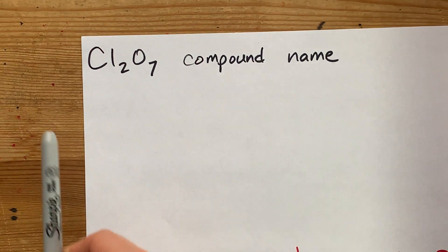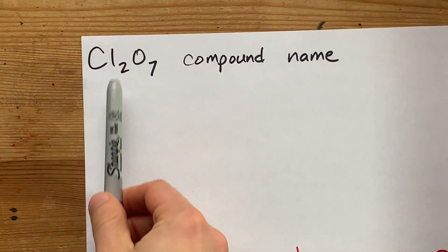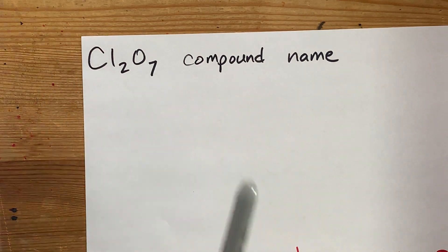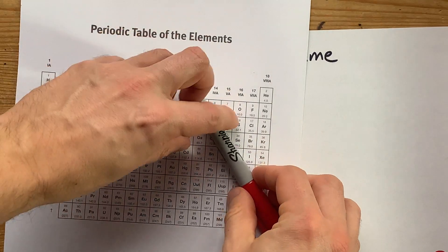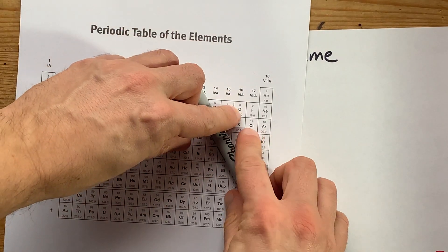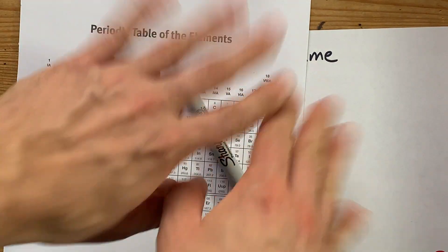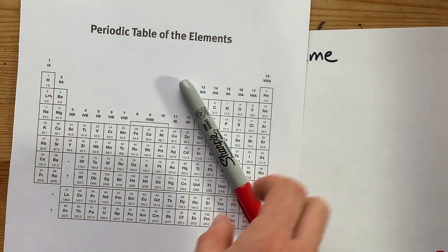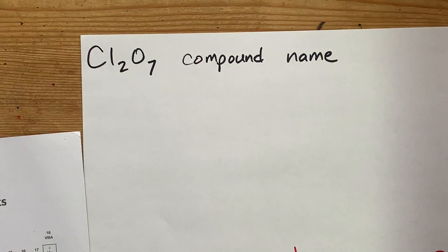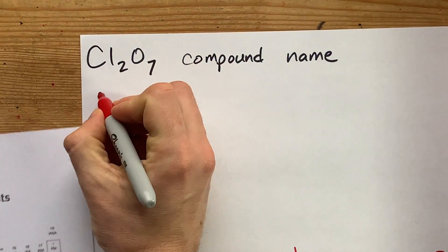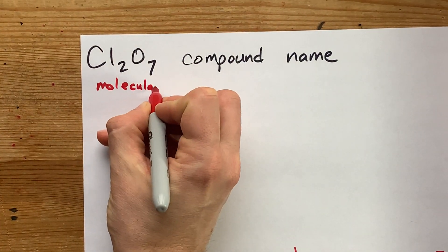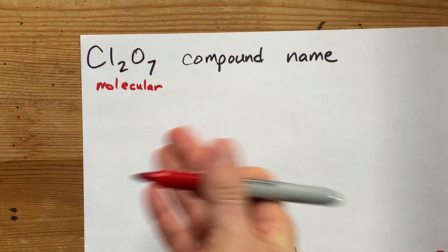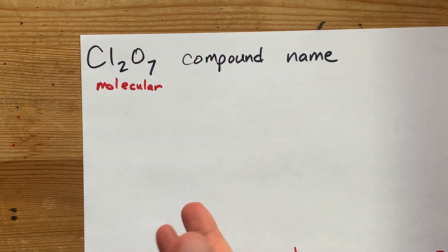What's the compound name for Cl₂O₇? First thing to point out is that both O and Cl come from the top right-hand corner of the periodic table. That means they're both non-metals, and this makes a molecular — some teachers call it covalent — compound.